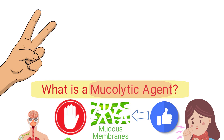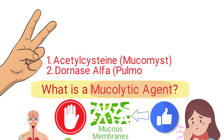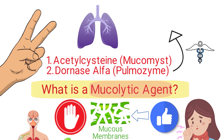The two primary types of mucolytic agents are acetylcysteine and dornase alpha. The key thing to remember about dornase alpha is that it is an inhaled drug that is most commonly administered to treat patients with cystic fibrosis. However, in this video we are focusing on acetylcysteine.